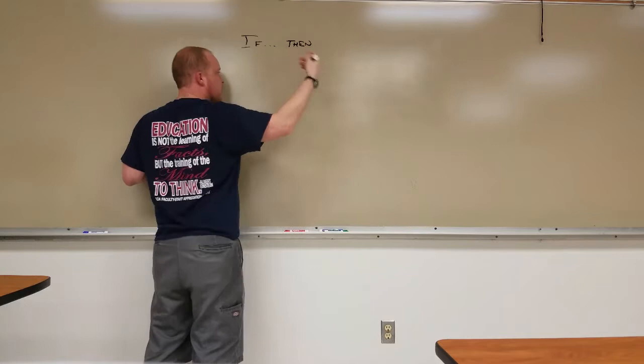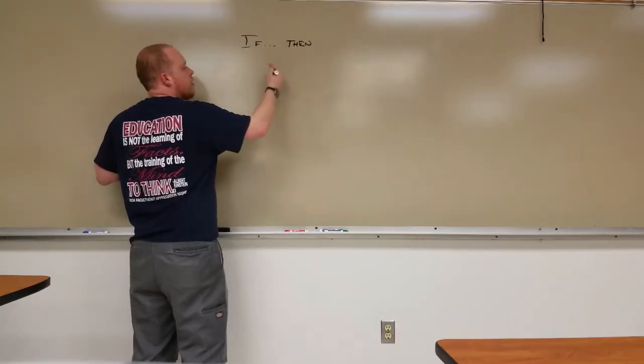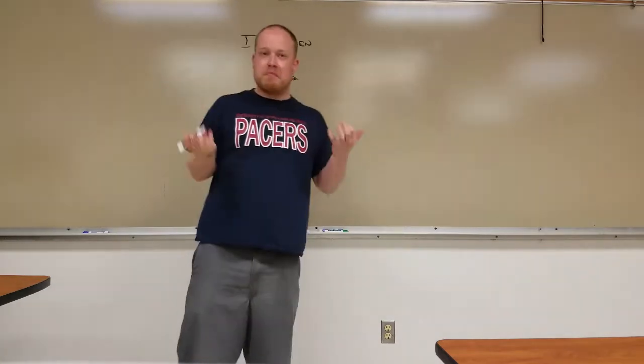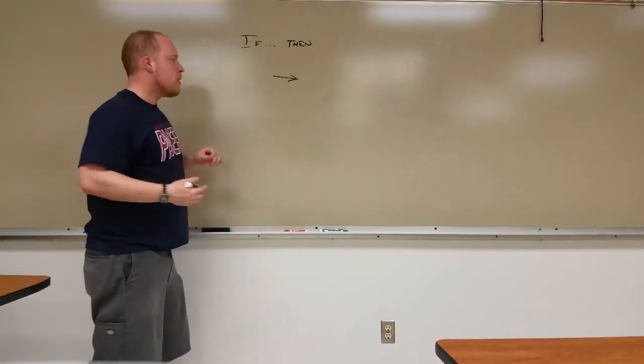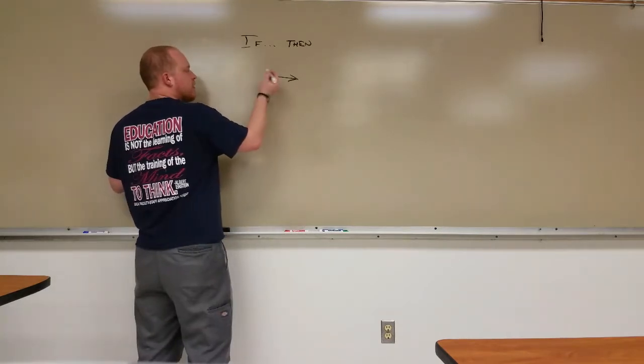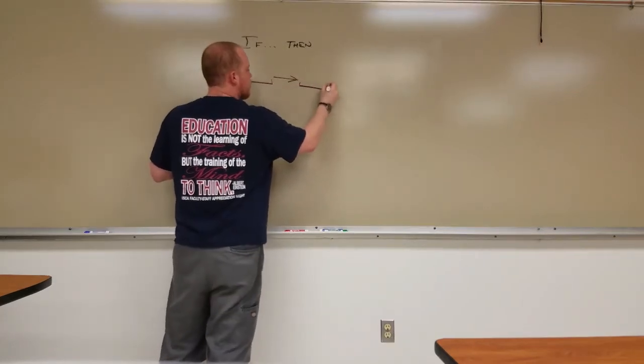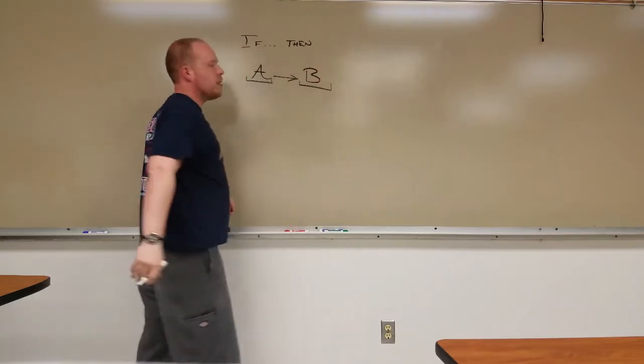And these are again technical names, conditional statements, if-then statements. And they're represented by the arrow. Now the arrow has, being a dyadic kind of statement, it has a left side and a right side. Usually we stick the variables a and b in there.